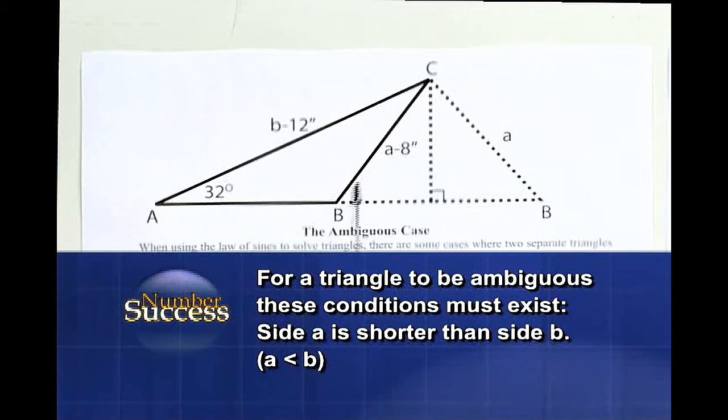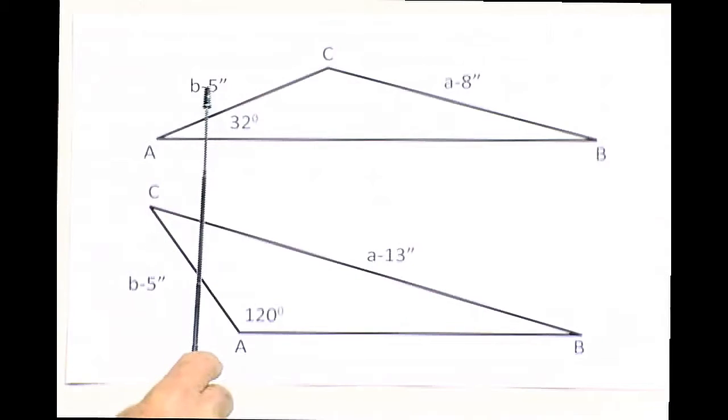This side A here, in the ambiguous triangle, is shorter than side B. Over here, B is 5 inches and side A is longer. So this is not an ambiguous triangle. This can be solved - you will find these angles.